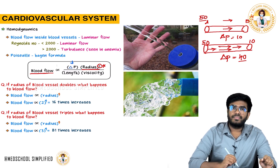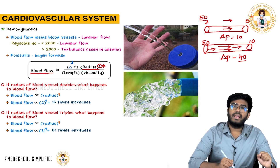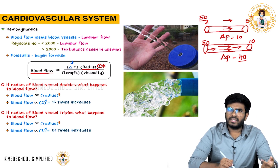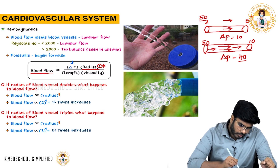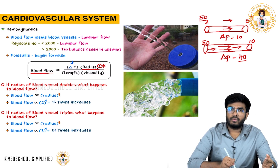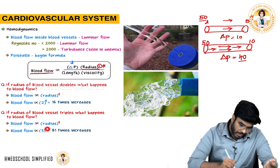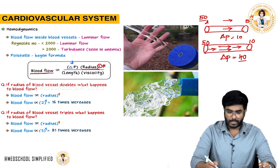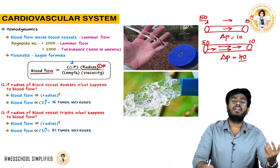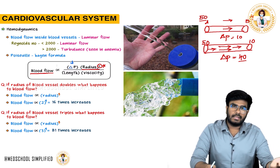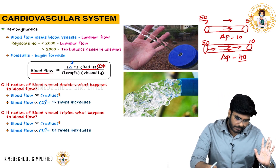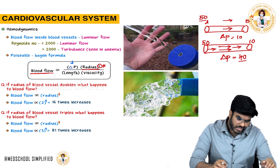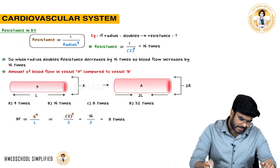If the radius of the blood vessel triples, what happens to the blood flow? Blood flow is directly proportional to radius to the power of 4. We have tripled the radius, so 3 to the power of 4 — that is 3 × 3 × 3 × 3 = 81 times. Blood flow is going to be increased by 81 times. These are two important questions to know for your exam.